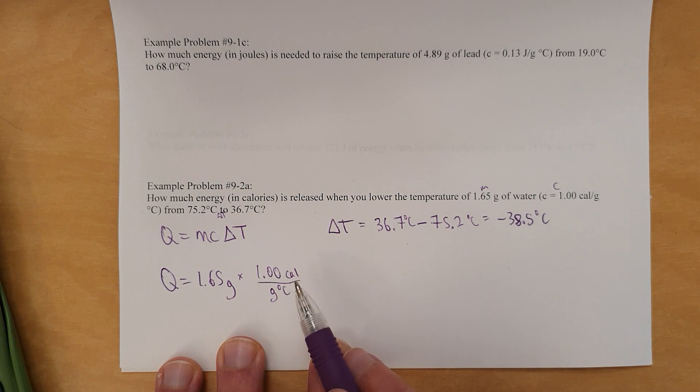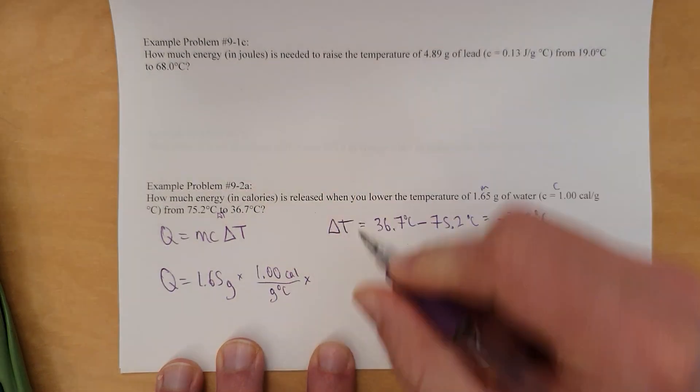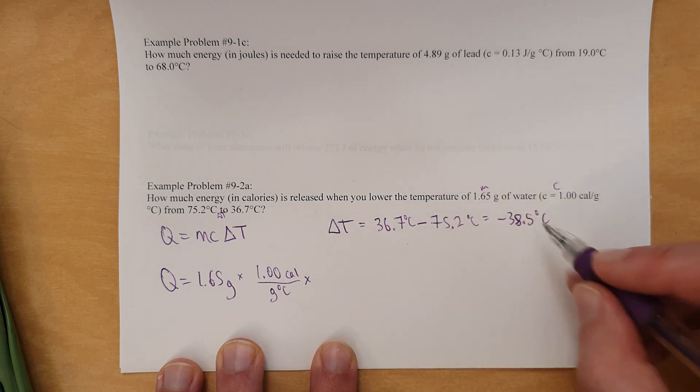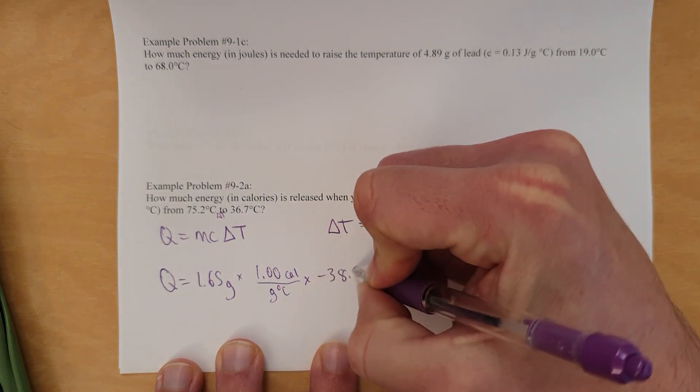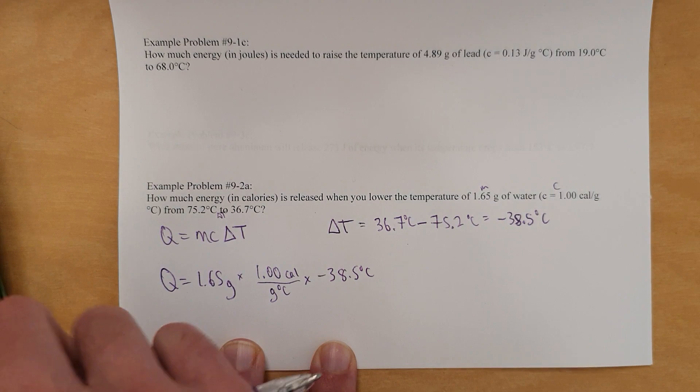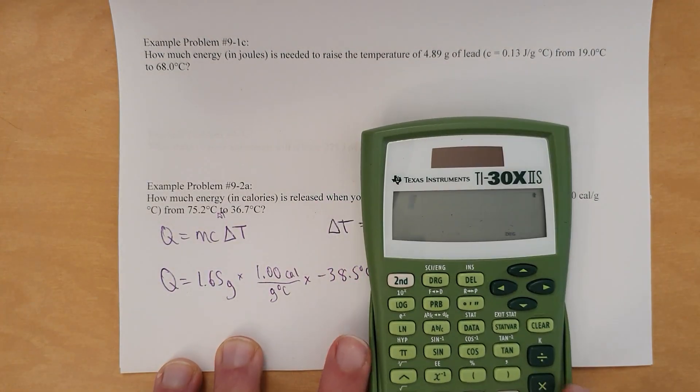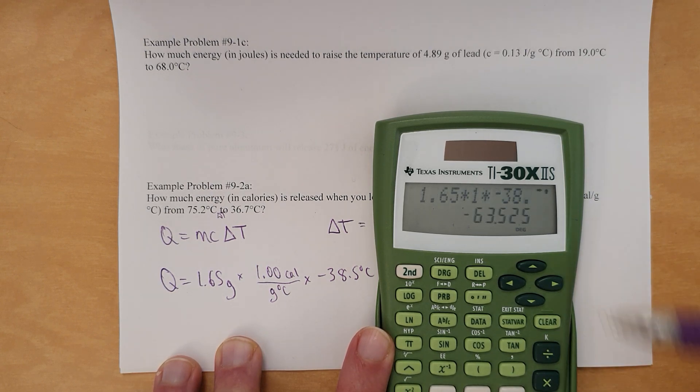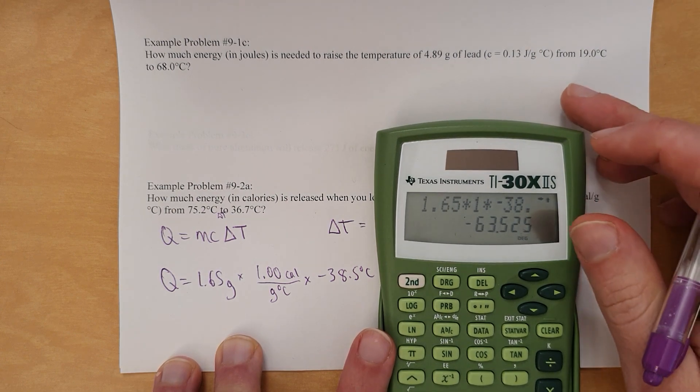So, you've got to watch those units. And anyway, so we're taking the mass times the specific heat capacity times delta T. This is the reason why it's required to show your units here. It's so that you can check that your things are canceling right to give you the units that you desire. And then you're timesing it by negative 38.5 degrees Celsius. And when we go calculate that out, 1.65 times 1. I know I didn't need to do that, but whatever, just to show the process. Times negative 38.5, we get negative 63.525.